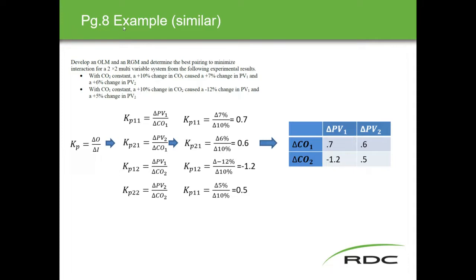This next example is very similar to the one in the self-test. I wanted to include it so you'd have a good idea of what the wording looks like in that type of question and how to get there using simpler values. The question is: develop an OLM and an RGM, and determine the best pairing to minimize interaction for a two-by-two system. Controller two is held constant, then a 10% change is made in CO1, causing a 7% change in PV1 and a 6% change in PV2.